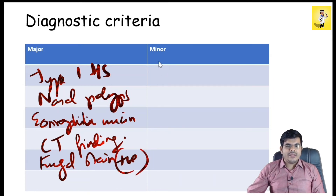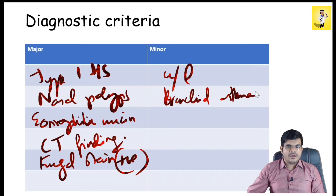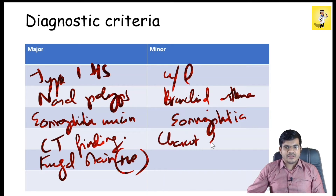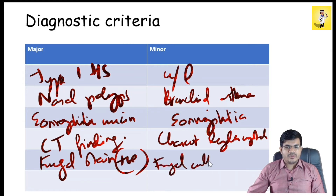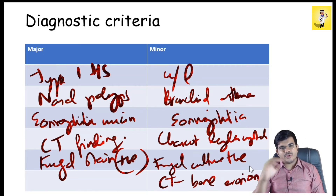The minor criteria associated with AFRS are: unilateral preponderance of nasal polyposis, bronchial asthma, presence of eosinophilia, Charcot-Leyden crystals, positive fungal culture, and bone erosion on CT. These are the various minor criteria associated with AFRS.